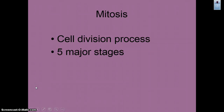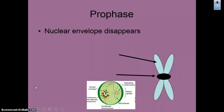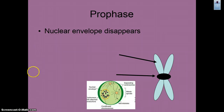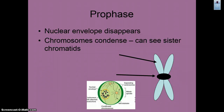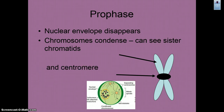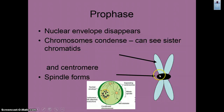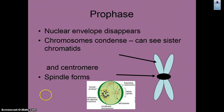Mitosis is a cell division process broken up into five major stages. The first is prophase — this is very simplified compared to advanced biology. During prophase, the nuclear envelope disappears, chromosomes condense, and we can see sister chromatids and the centromere. In animal cells, spindle fibers form, which are what allows the chromosomes to be split.